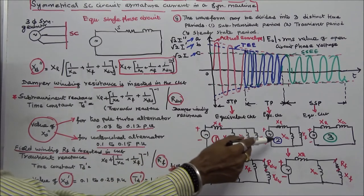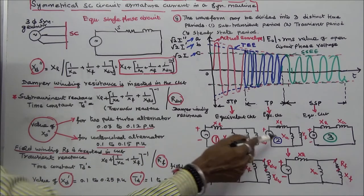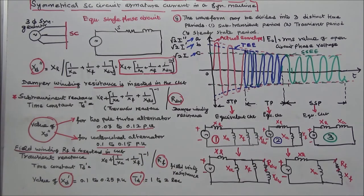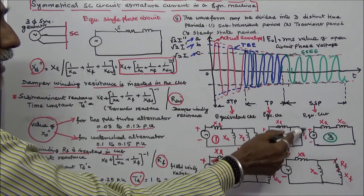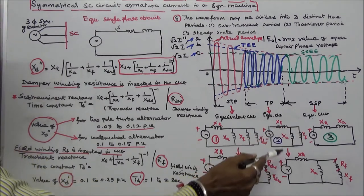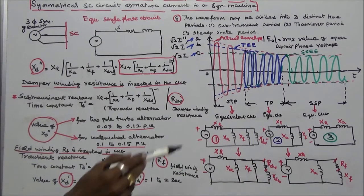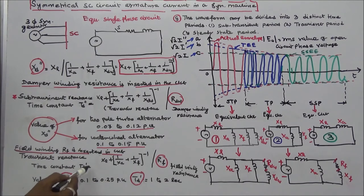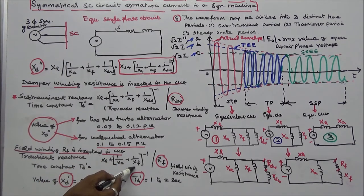The second figure is the equivalent circuit of transient reactance. Here XA and XF are connected in parallel, and XL is connected in series with the source. Therefore, X dash (transient reactance) is equal to XL plus the inverse of (1/XA + 1/XF).